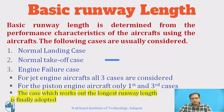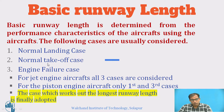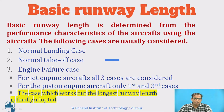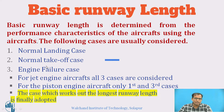The basic runway length is obtained by considering three factors: it should be sufficient for safe landing, sufficient for safe takeoff, and in the case of engine failure, the length of the runway should be sufficient to stop the aircraft and return safely. In this session, we will learn how to find out the basic runway length for the engine failure case. Out of the three calculated lengths, the longest one is finally adopted.